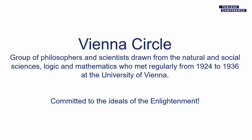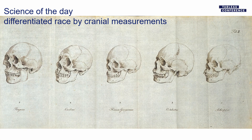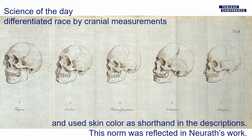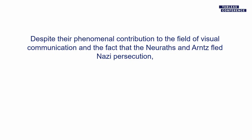Those three folks were part of an intellectual group in the thirties in Vienna called the Vienna Circle — philosophers and scientists and really forward thinkers of their time, committed to the enlightenment, thinking about how to talk about science, astronomy, math, and logic. But science of the day differentiated race by cranial measurements. That was what the science of the day did. And they used skin color as a shorthand in their descriptions, so this kind of norm was reflected in the work that the Neuraths built.